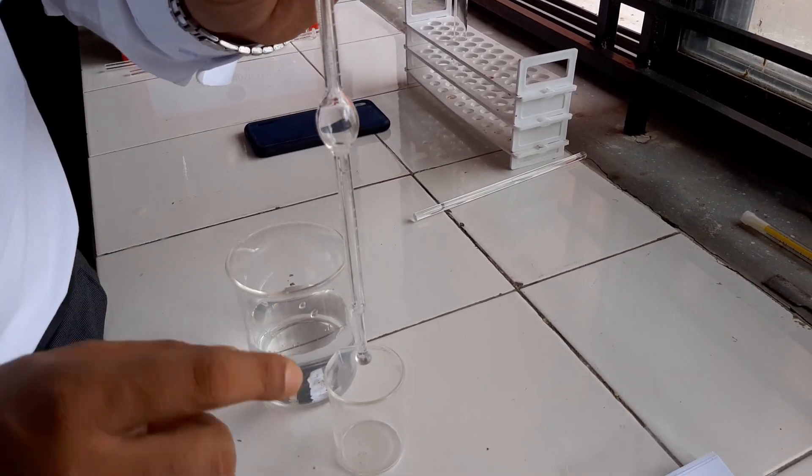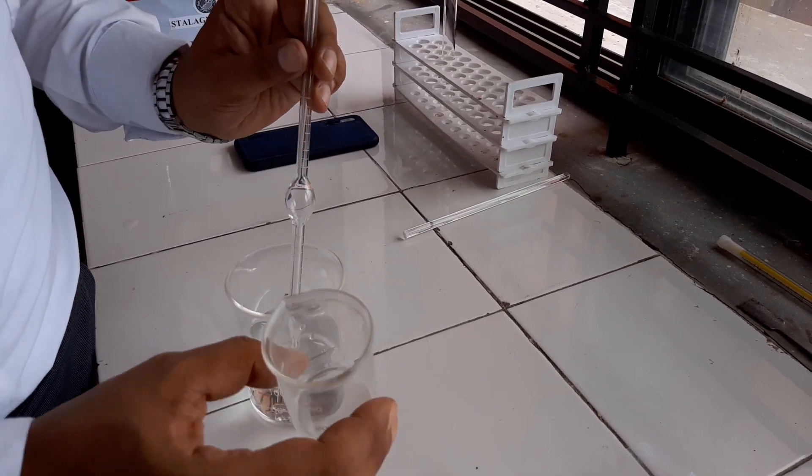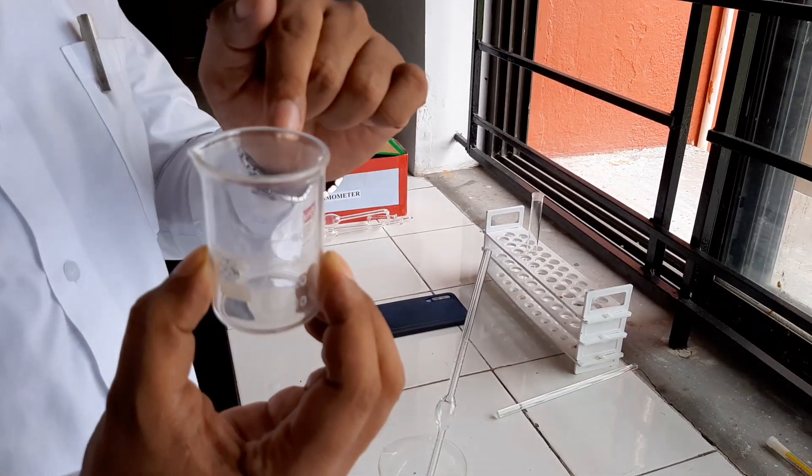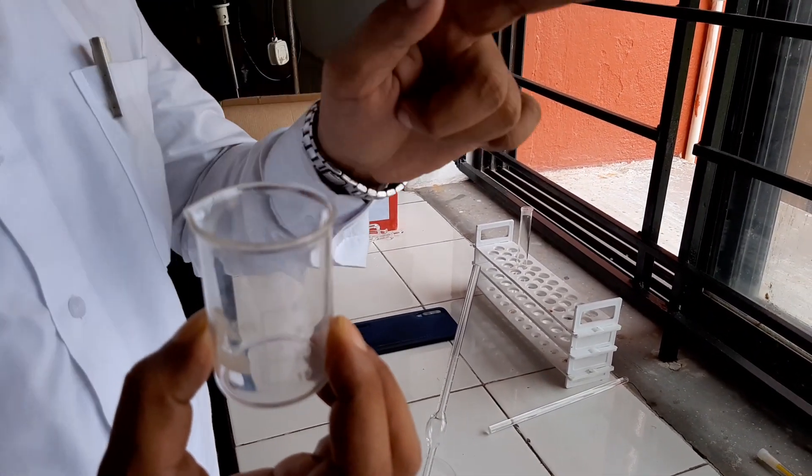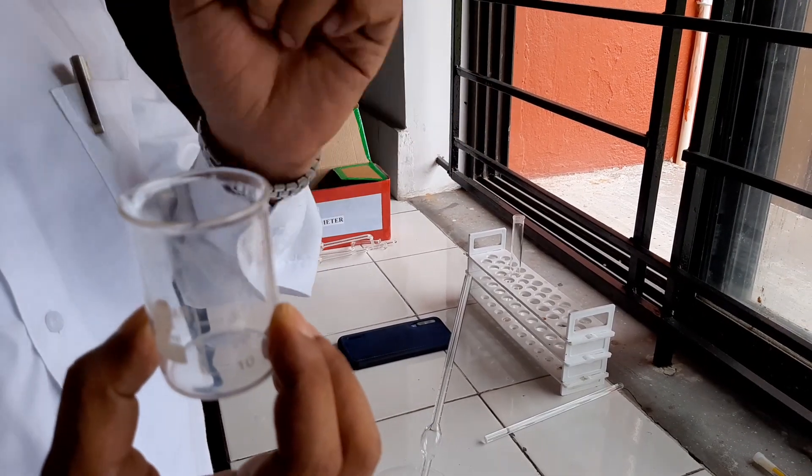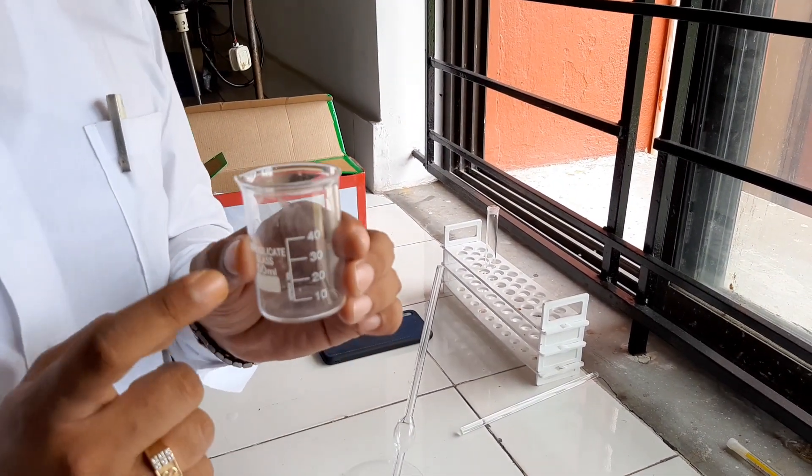After taking the liquid, you have to take the weight of empty beaker plus liquid. Suppose that is W2. So, W2 minus W1, you will get the weight of the liquid.